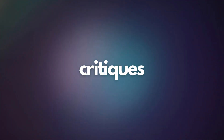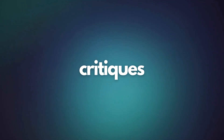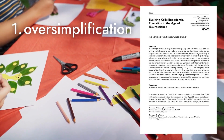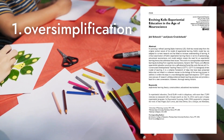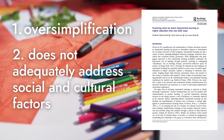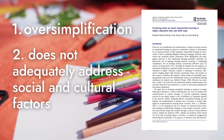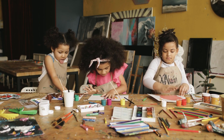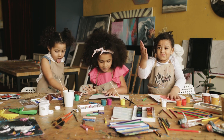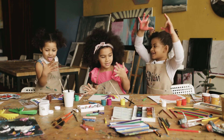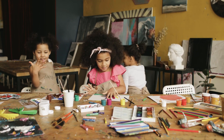Now that we have a solid understanding of Kolb's theory, let's turn our attention to the critiques it has faced. Some scholars have argued that Kolb's theory oversimplifies the complexity of learning and places too much emphasis on personal experience. They claim that the theory doesn't adequately address social and cultural factors that influence learning. However, it's important to note that these critiques do not necessarily invalidate Kolb's theory. While it may have limitations, his model provides a valuable framework for understanding the learning process and has been widely applied in various fields.